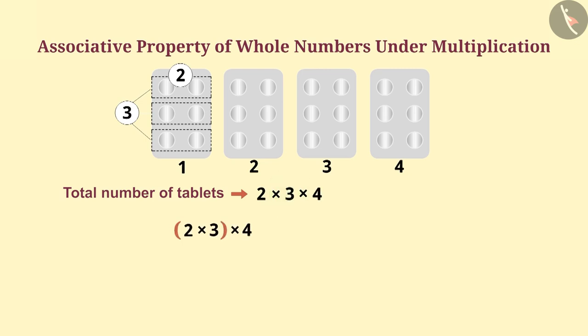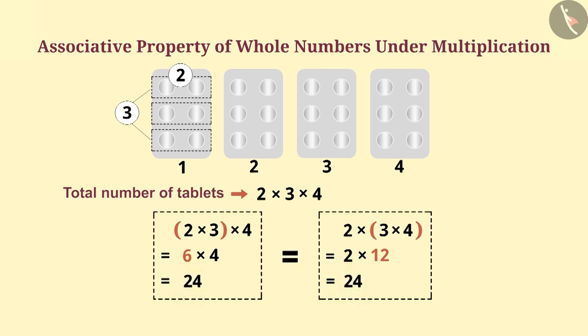To solve this, a group of 2 and 3 can be made or a group of 3 and 4 can be made. In both cases, the result is 24 tablets only.